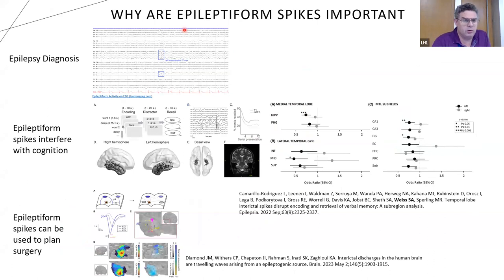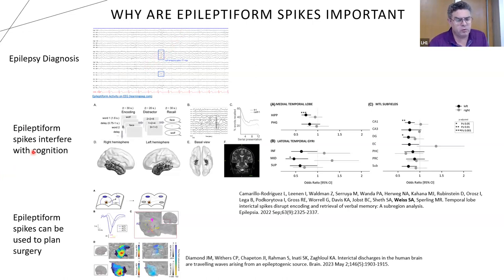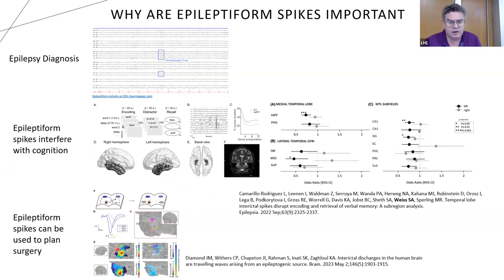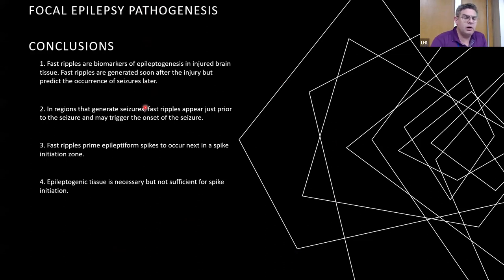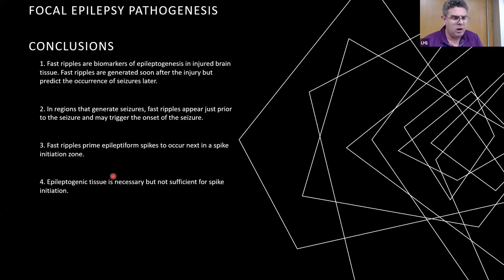Understanding the mechanism generating epileptiform spikes is important because: epileptiform spikes are central to the diagnosis of epilepsy; they interfere with cognition in a neuroanatomically specific manner; and identifying the spike initiation zone may help plan more effective epilepsy surgery. In conclusion of this section, fast ripples are biomarkers of epileptogenic and injured brain tissue, generated soon after injury but predicting seizures later. Fast ripples appear just prior to seizures in regions that generate them, may trigger seizure onset, prime epileptiform spikes in the spike initiation zone, and epileptogenic tissue is necessary but not sufficient for spike initiation.